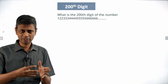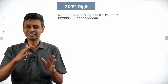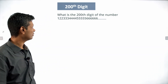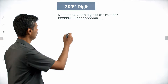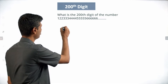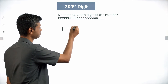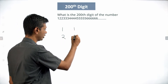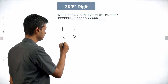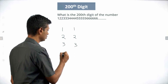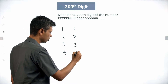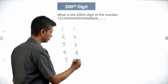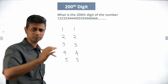So, this goes 1, 2, 2, 3, 3, 4, 4. The pattern is very clear. I am going to think about: 1 appears 1 time, 2 appears 2 times, 3 appears 3 times, 4 appears 4 times, 5 appears 5 times, and so on.